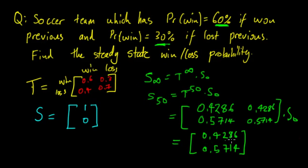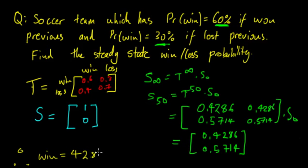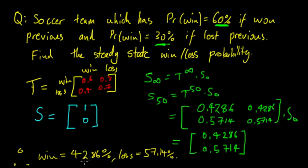So S_50 is approximately equal to S_infinity. The long-run steady state win/loss probability is: win = 42.86% and loss = 57.14%. Obviously it will fluctuate between individual games, but over 300 games you'd find that on average 42.86% of the time they won and 57.14% of the time they lost.